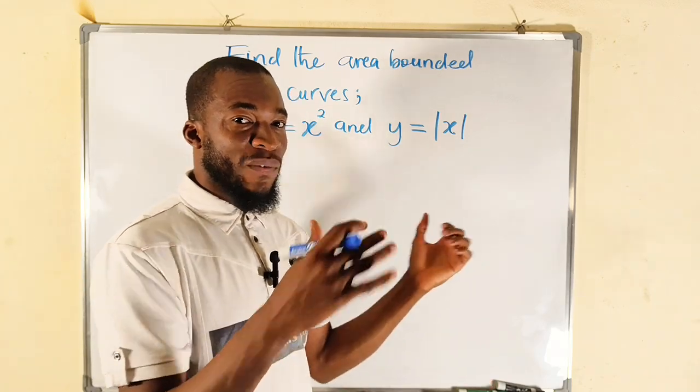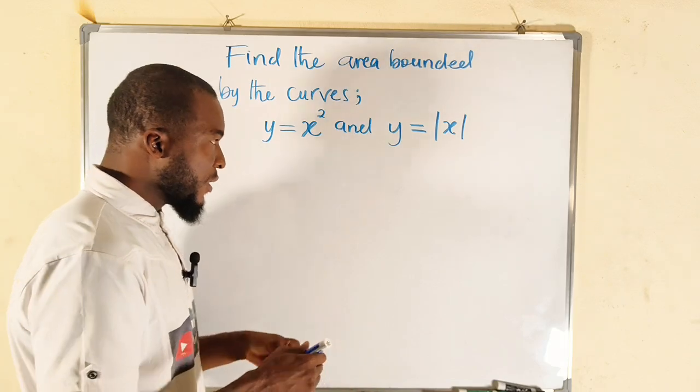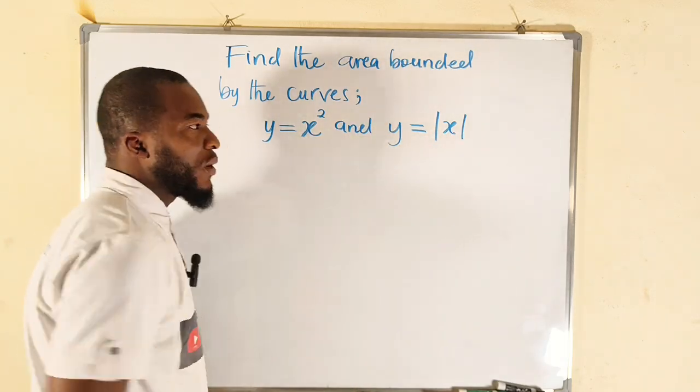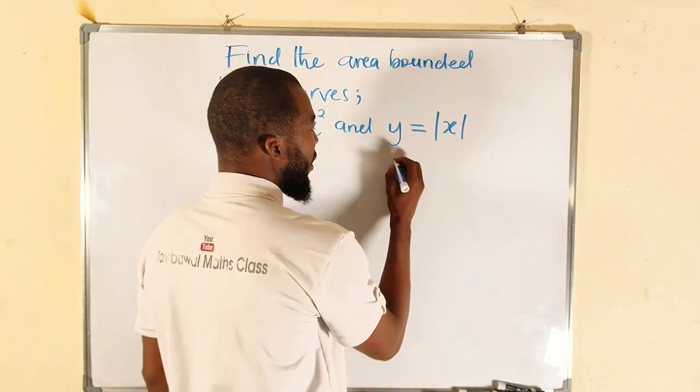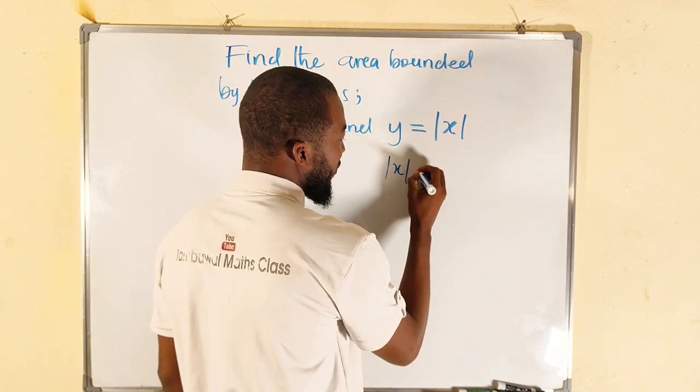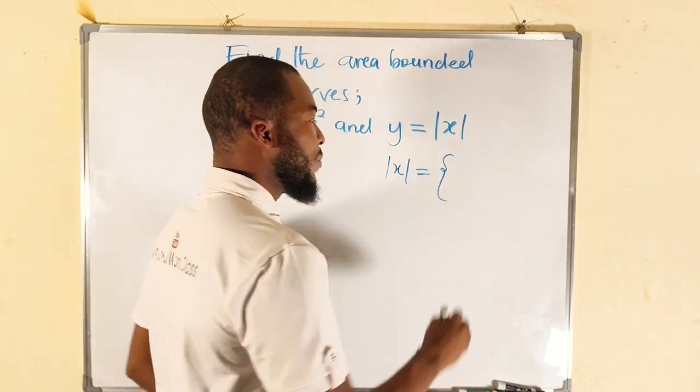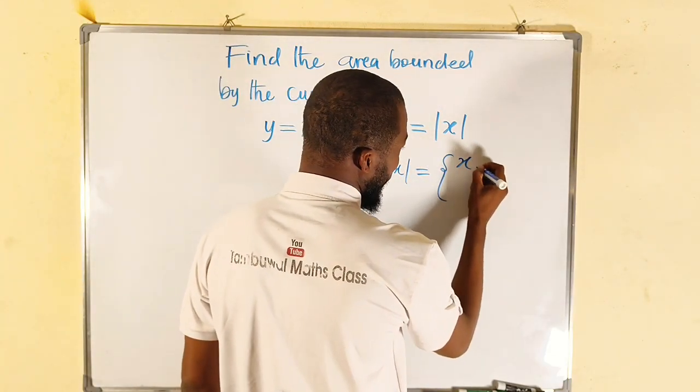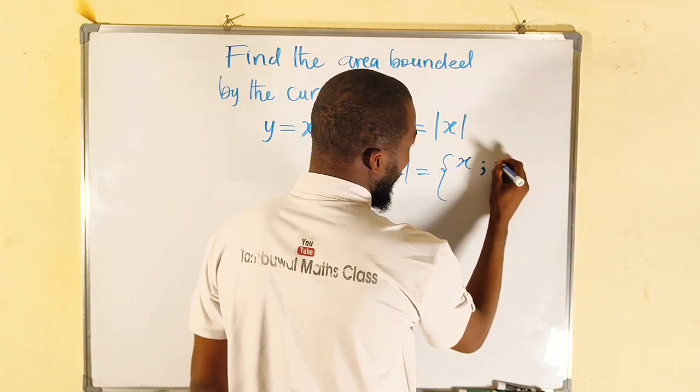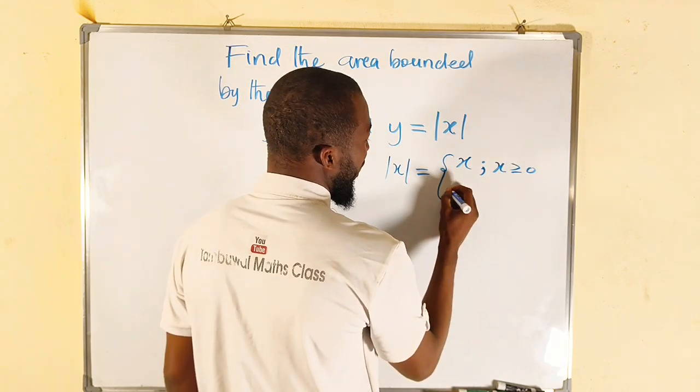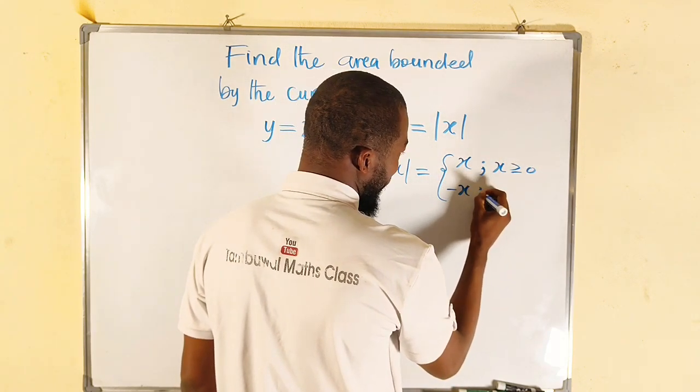I'll find the points of intersection before we integrate. So first of all, I would like to sketch this one, the absolute value of x. You know absolute value of x is a piecewise function. It depends on x—x could be positive if and only if x is greater or equal to zero, and x could be negative if x is less than zero.